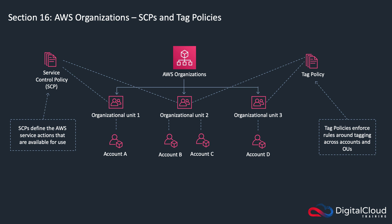Here's an example: if you have a service control policy applied to an organizational unit that does not allow people to launch a specific type of EC2 instance, then even if you have a root account or an account with full administrative permissions, if you're sitting in an account that has that OU or that SCP applied to it, you're not going to be able to launch that particular instance type. We'll actually see this in action in the labs.